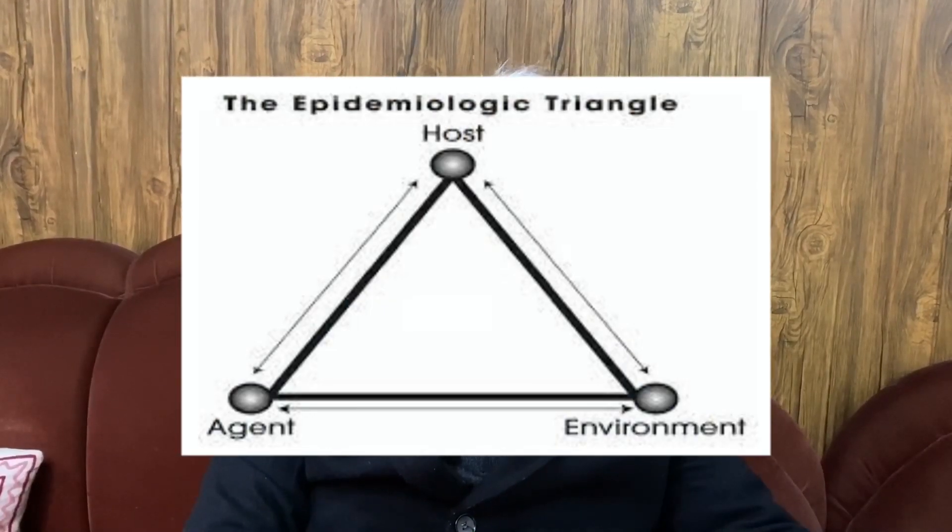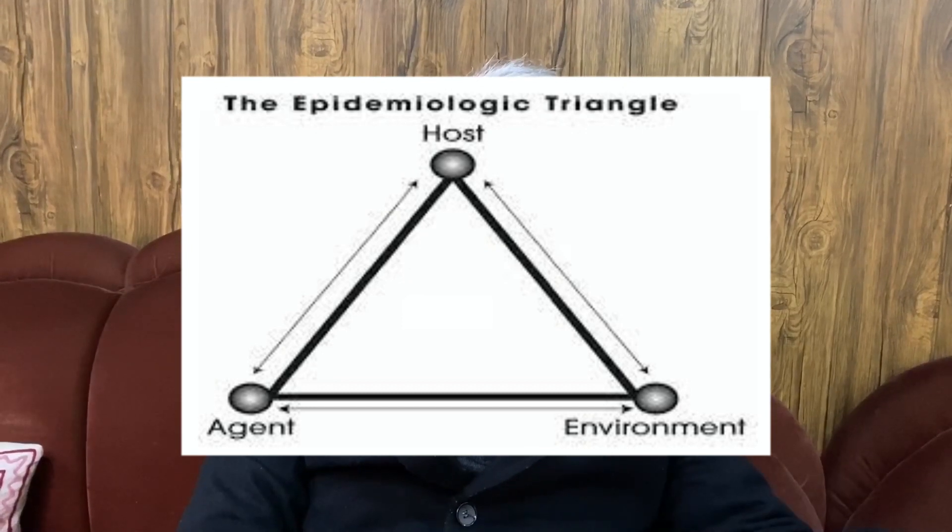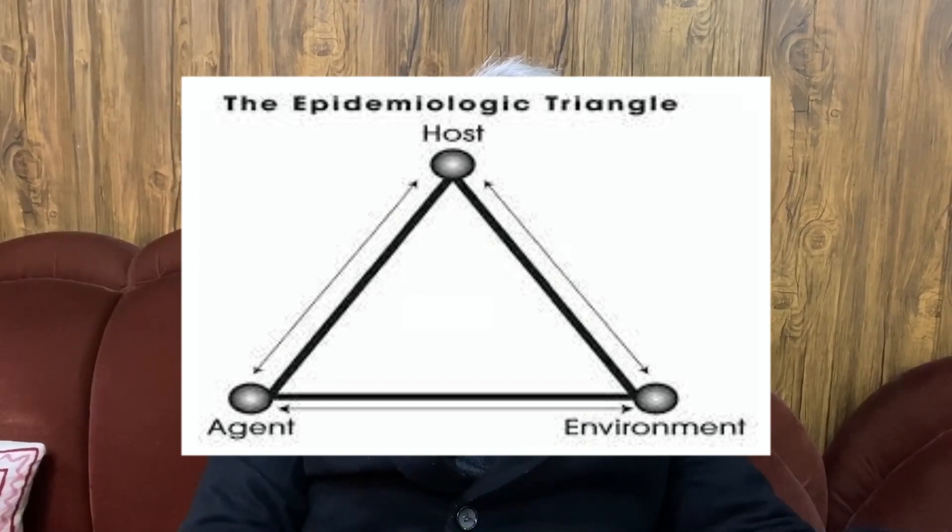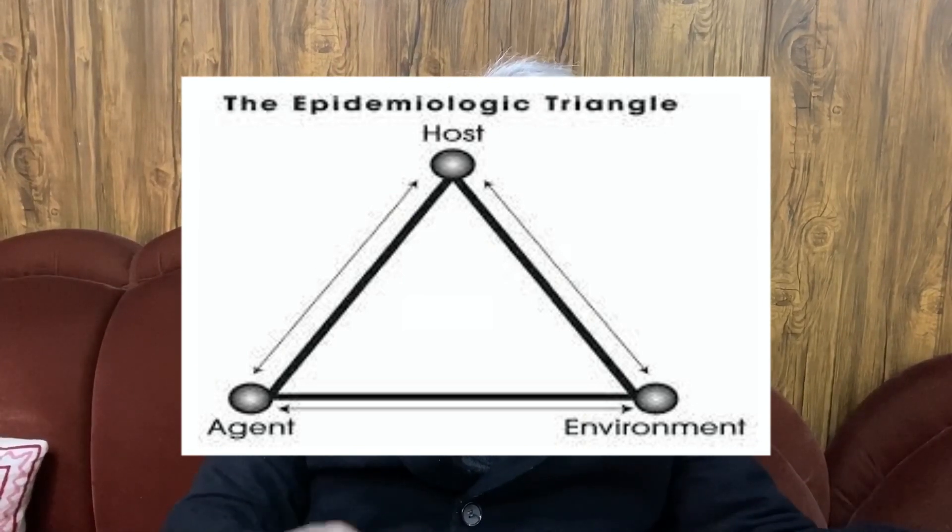It's a scientific study of distribution, and when I talk about distribution I'm talking about how it happens, where it happens, why it happens — so the five W's are the basic principles of how we learn epidemiology. Studying only the distribution would be incomplete because we must also study the determinants. How and why are the determinants, whereas what, when, and where are the distribution components of epidemiology.